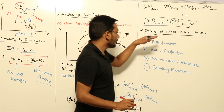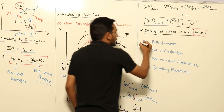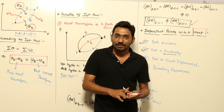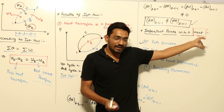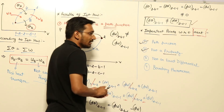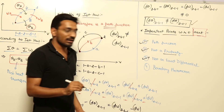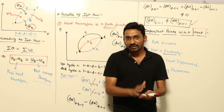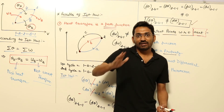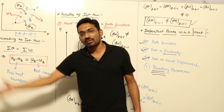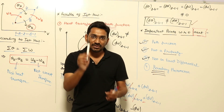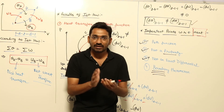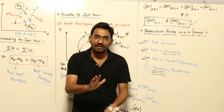Since heat transfer is a path function, it is not a property of the system — because properties are point functions that depend only on initial and final conditions. If it is not a property, it is not an exact differential. Furthermore, like work transfer, heat transfer is a boundary phenomenon. In thermodynamics, heat transfer is said to occur only when it crosses the boundary of the system — either going out or coming in. If it does not cross the boundary, there is no heat transfer.